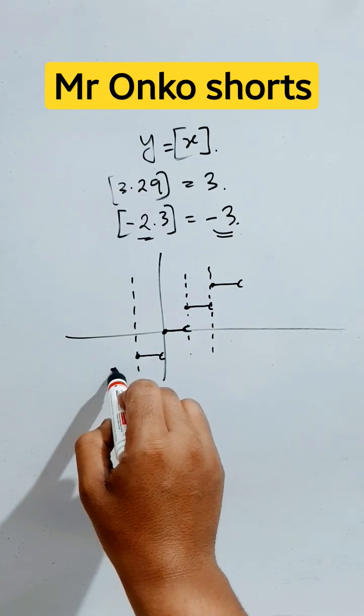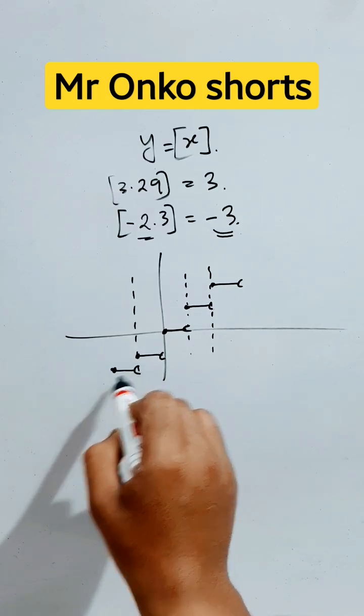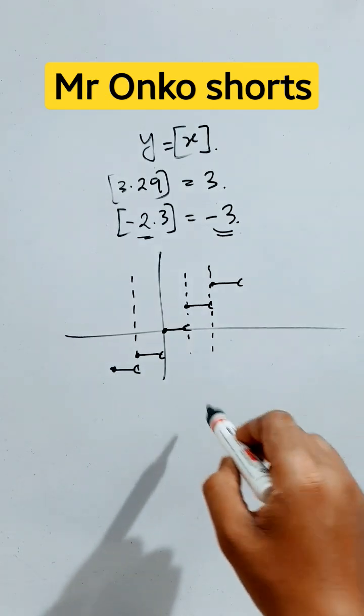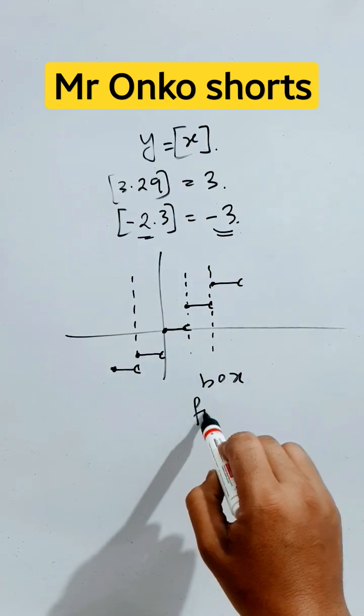It will be minus 2 to less than minus 1. So this is the graph of box function. I think it's crystal clear to you.